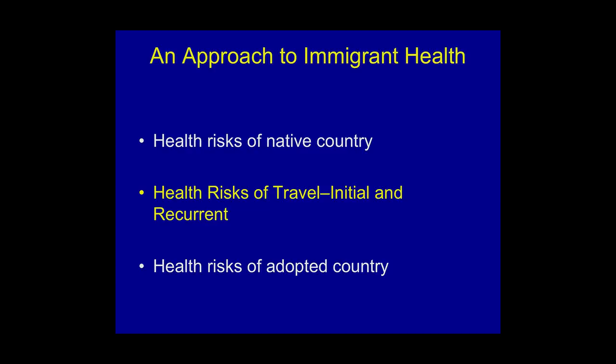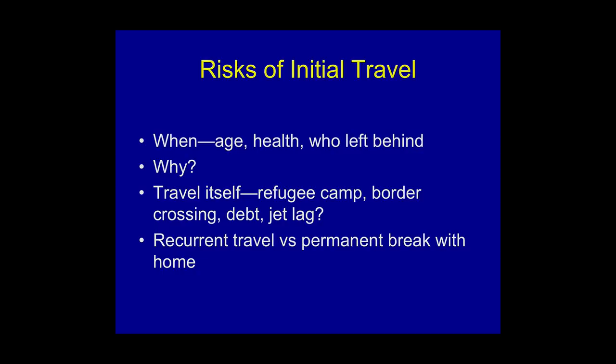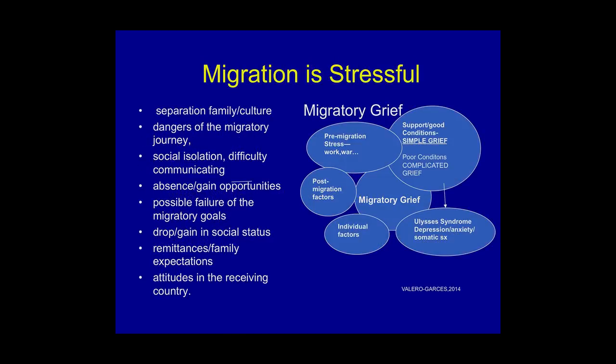We also need to think about the risks of travel, both initial travel and recurrent travel. I had a patient recently from Ethiopia — I've taken care of most of her family — and I thought she had just come on a plane. She said her trip was tough. It turned out she had been jailed in Ethiopia, got out, flew to Dubai, then Russia, then Colombia, and then walked across the border into California where her family picked her up. I would never have known that story and all the risks that come with it if I hadn't asked.